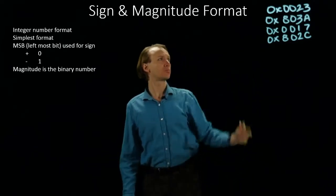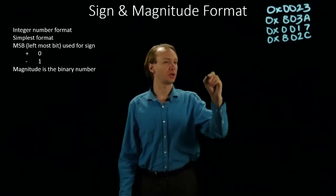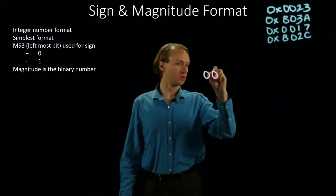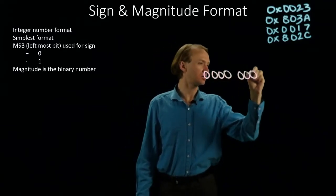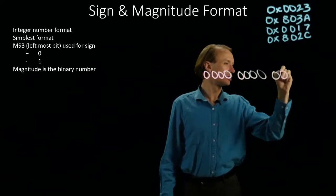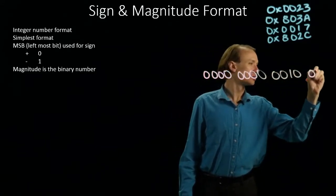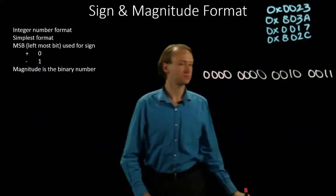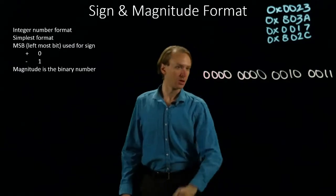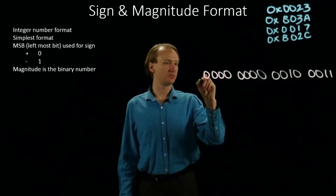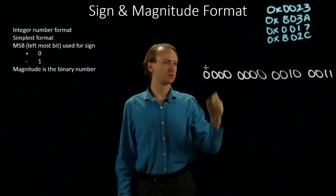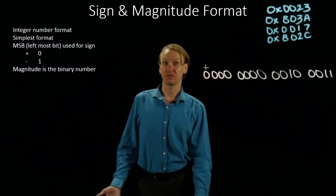Our first number is 0023. So in binary, this looks like this. Our leading bit is a sign bit, and in this case, it's telling us we have a positive number.